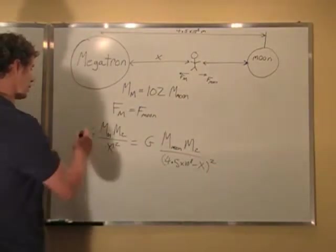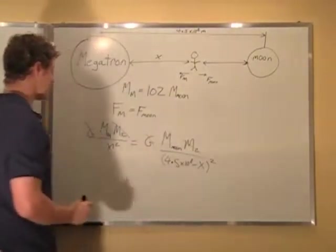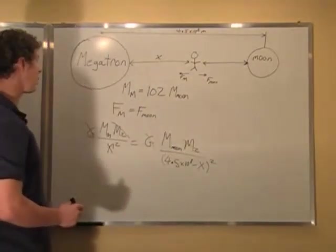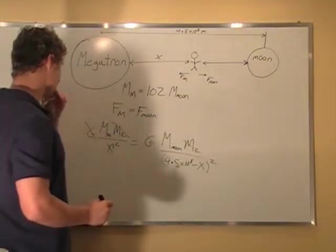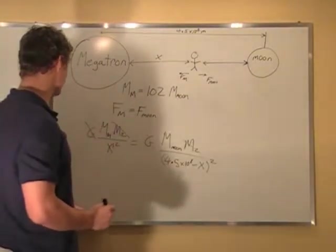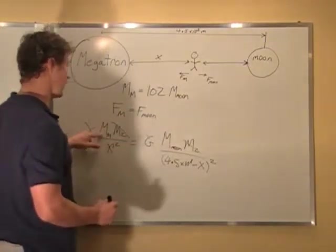Okay, so now we do some algebra. We can divide this out, the G, we can divide M2 out. And so we can say we're looking for R. So we can say that move X to this side, and mass of the moon to this side.